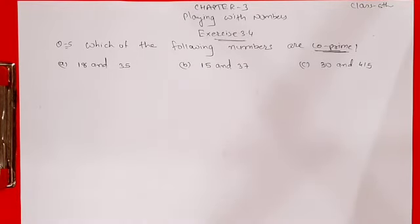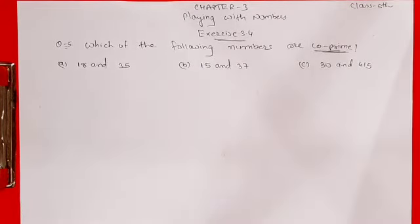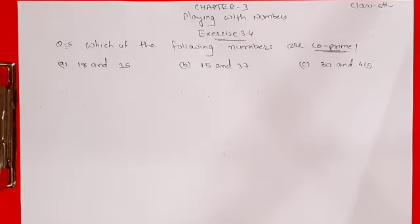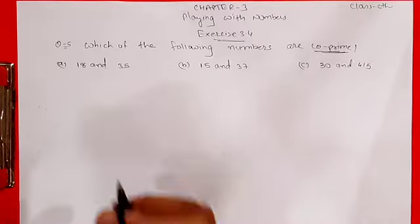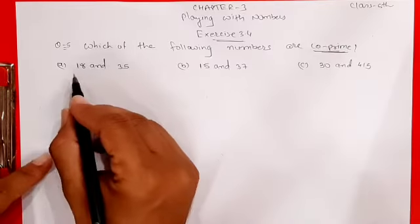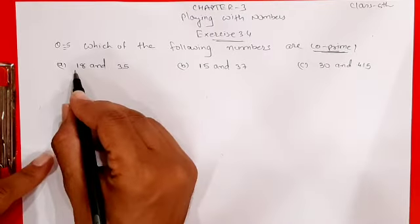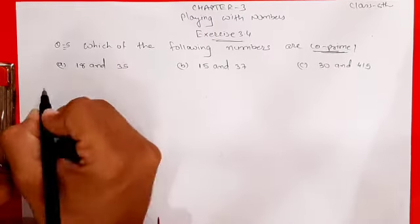We will find factors of both numbers, and if the only common factor is 1, then we can say those two numbers are co-prime numbers. The first pair given is 18 and 35.